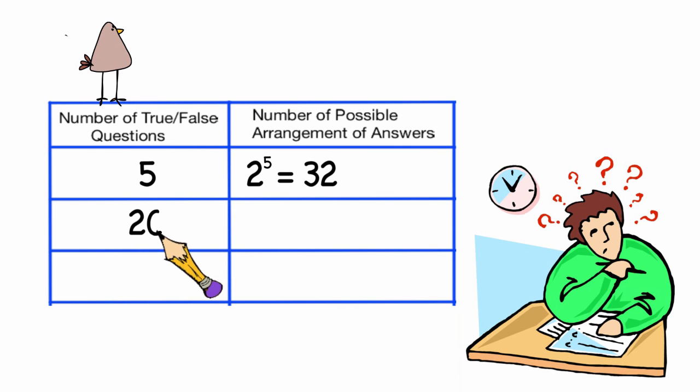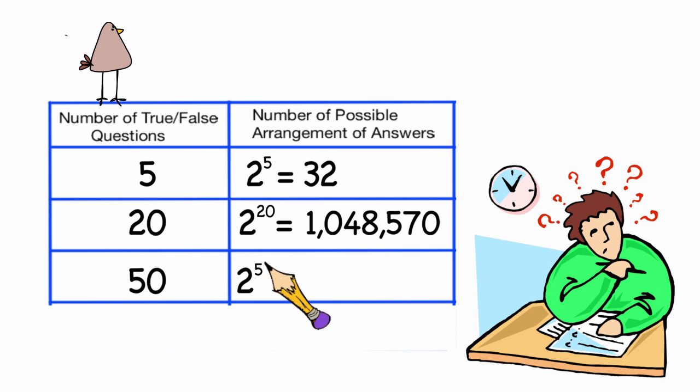Let's say if we had 20 questions. There are two choices for each of the 20 questions, so that would have been two to the 20th, which is 1,048,570. But what if there were 50 questions? That would be two to the 50th, or 1,125,899,906,842,624. That number is getting quite cumbersome.